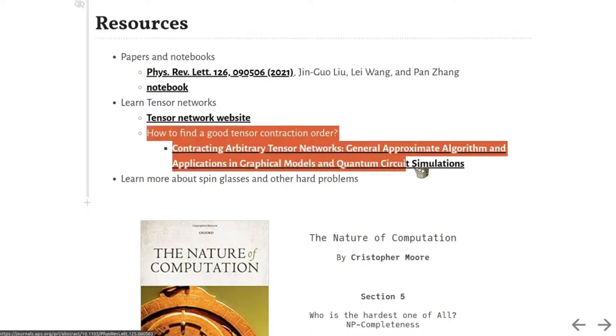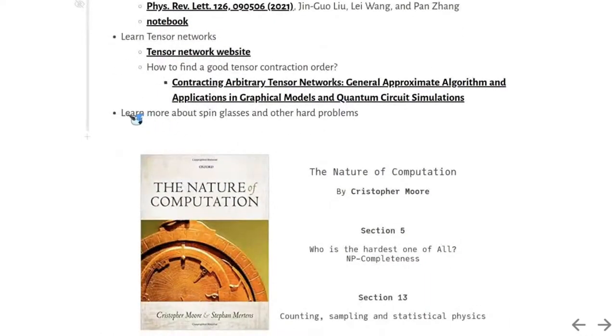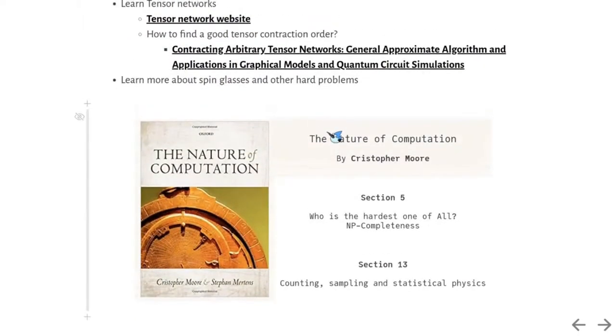Also, here is a reference for finding the contraction order. Finding the optimal contraction order is known as NP-hard, which means unlikely to be solved in polynomial time. Hence, it is an actively developing open problem.